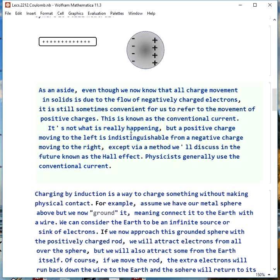In solids, we know that all charge motion is due to negatively charged electrons. It's still sometimes convenient for us to stick with this idea that positive charges are moving. So positive charge moving to the left is really the same as a negative charge moving to the right, except if we are talking about something called the Hall effect, which we'll discuss later.